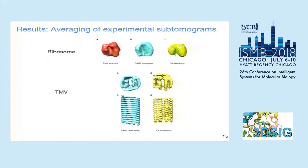For the averaging of experimental subtomograms, our method recovers more details of the ribosome structure as compared to fast alignment. For the tobacco mosaic virus, which has a 17-fold rotational symmetry, the symmetry makes fast alignment prone to missing wedge effects. Our method recovers a symmetric structure whereas fast alignment does not.